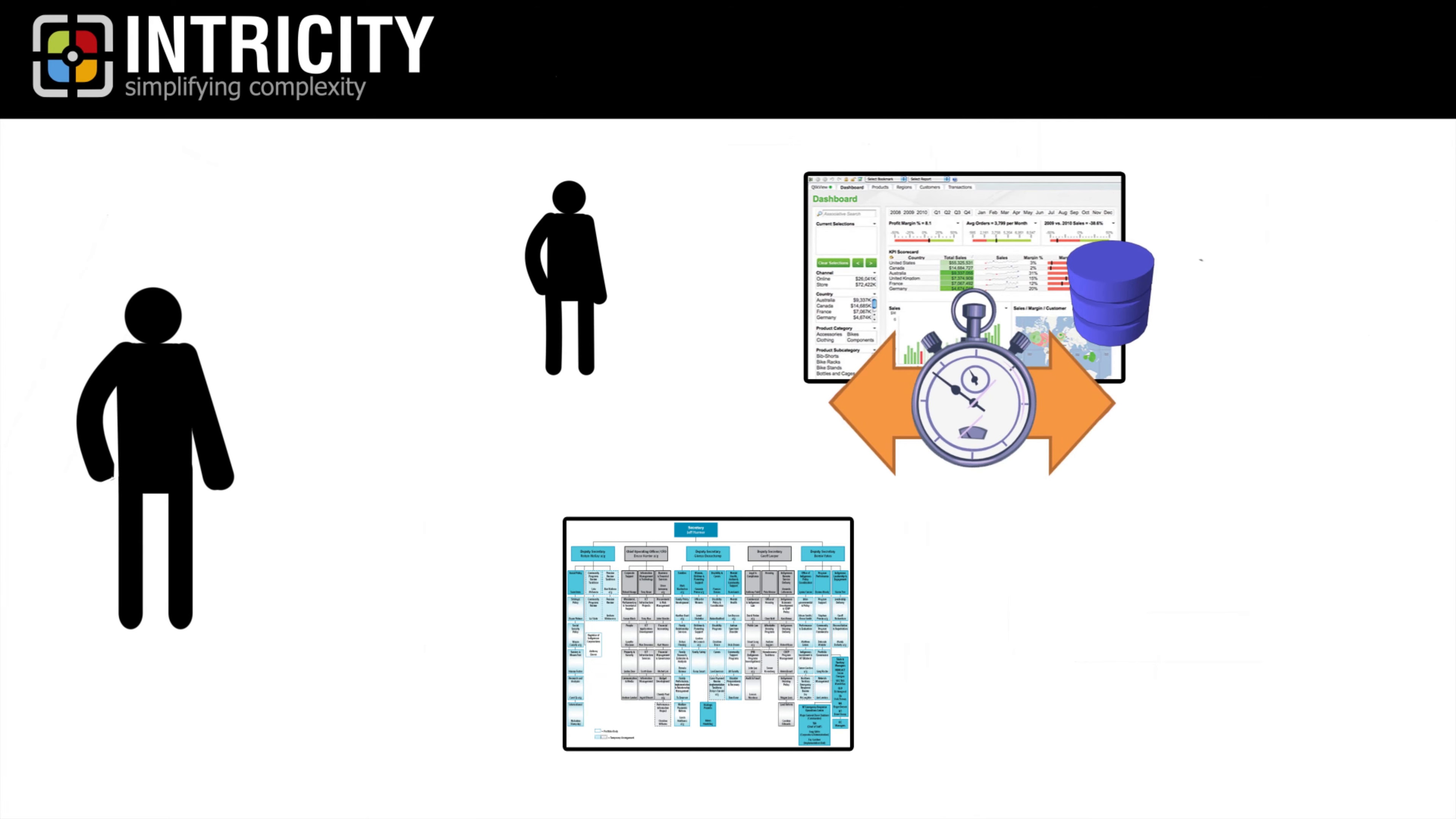These self-service BI vendors approach the hairball of data integration with assumptive associations. So, for example, if you have a source of data that has a date-time column, it will automatically associate that column with the date-time of another source of data. Was it possible that an incorrect association could be made? Sure it was.